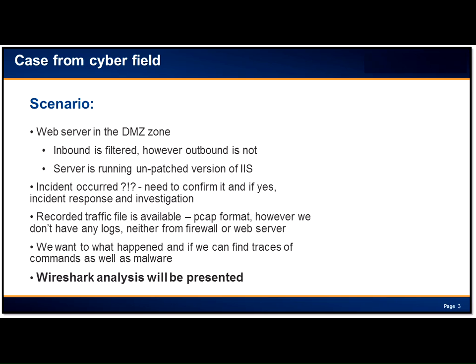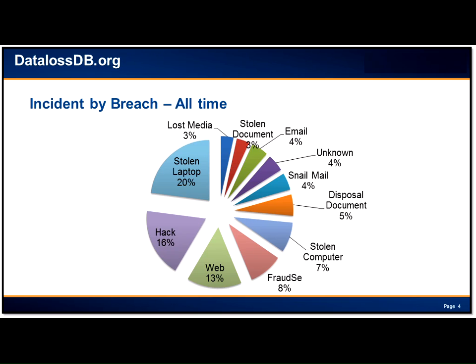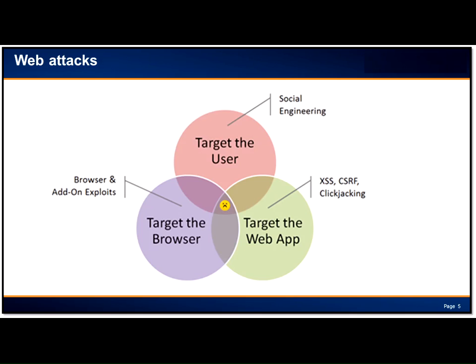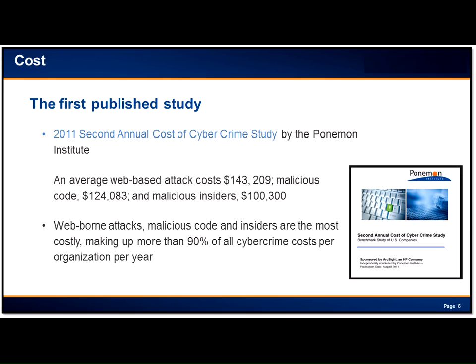Switching to the presentation for context: if you don't know datalossdb.org, it's a site that tracks incidents. Web and hacking is the most prevalent category. Exploitation typically targets web applications, the user/browser, or a combination. There's an interesting study by Larry Ponemon on how much it costs to bring in someone like us for investigation and remediation — and it's not for notification or credit card replacement.